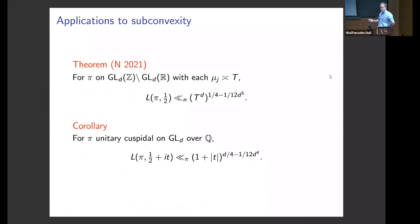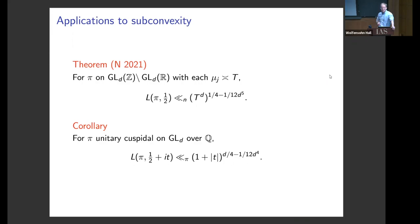For π on GL(D), say of level one, provided that all of the μ_j are of size T, we get a bound that saves on the convexity bound by the exponent 1/(12D^5), which is a small positive amount. This is a corollary — for example, one can treat the T-aspect for standard L functions: L(π, 1/2 + iT) is bounded by a small improvement over the convexity bound.